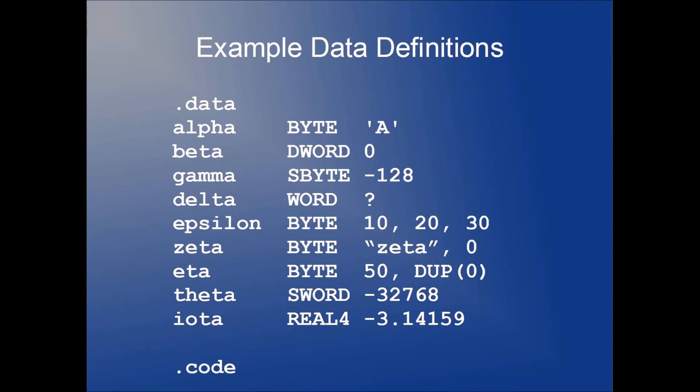We have eta, which is going to be an array. And here, with the dupe command, we're essentially saying that eta is going to have 50 elements that are bytes. And each one of those elements is going to be initialized to zero. Dupe has a special job in this instance where we're able to say, hey, for each one of these elements, let's go ahead and store zero inside of these elements.